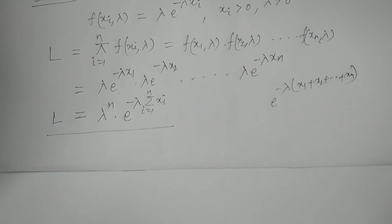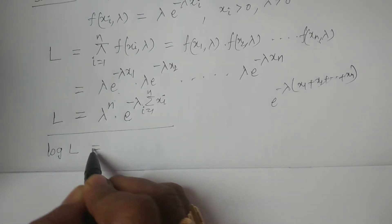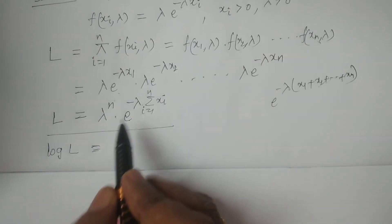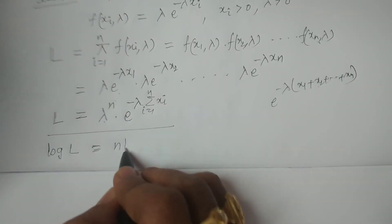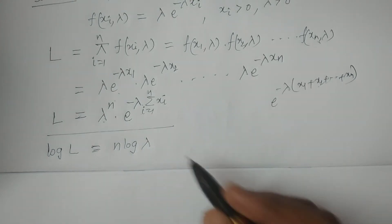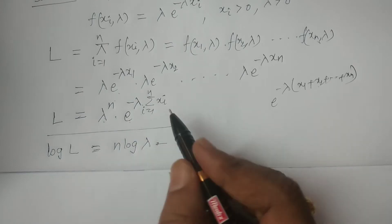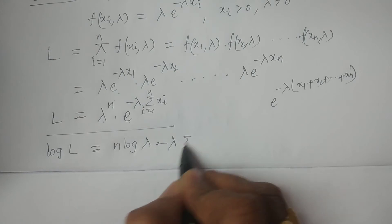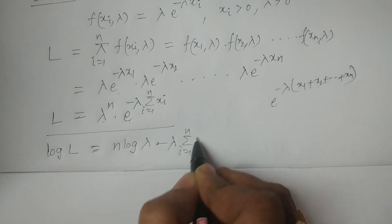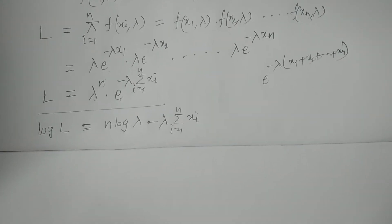For this you have to calculate the logarithm. log L is equivalent to: log(lambda^n) + log(e^(minus lambda · Σxi)), which gives n·log(lambda) minus lambda · summation xi from i=1 to n. This is the log-likelihood function log L.